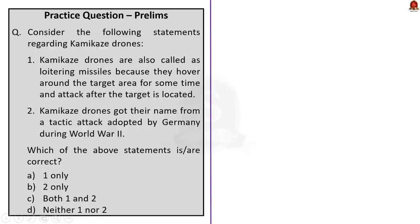Second question: consider the following statements regarding kamikaze drones. Statement one: it is also called a loitering missile because they hover around the target area for some time and attack after the target is locked — this is correct. Statement two: kamikaze drones got their name from a tactic adopted by Germany during World War II — this statement is incorrect; the name kamikaze is derived from a tactic adopted by the Japanese during World War II. The correct answer is option A: one only.